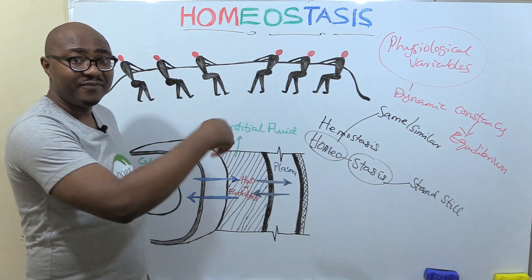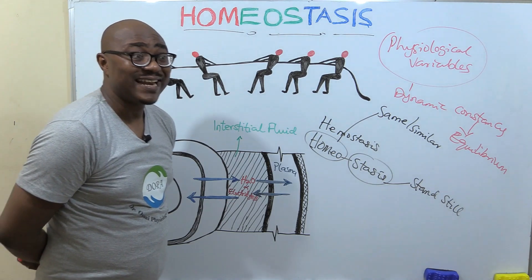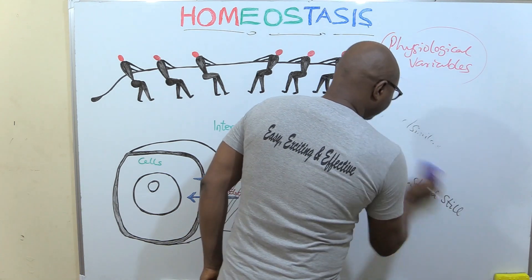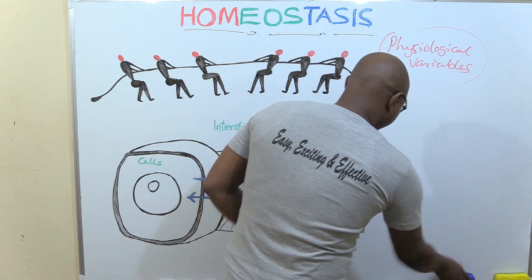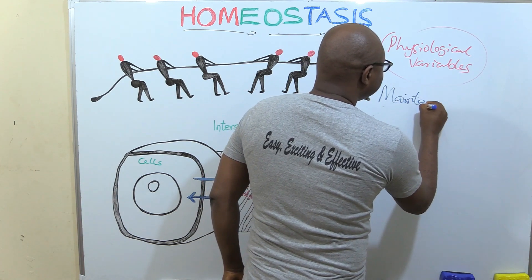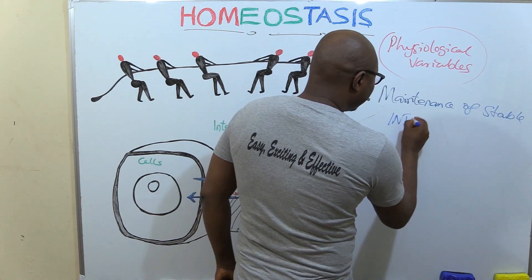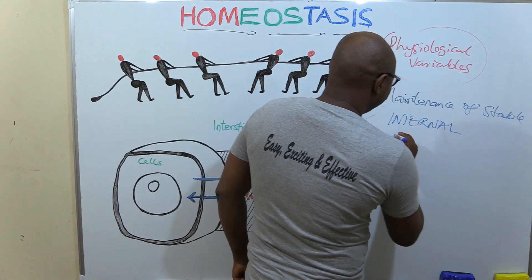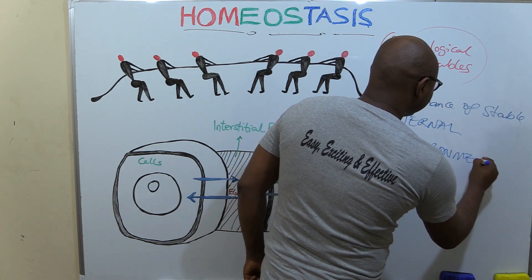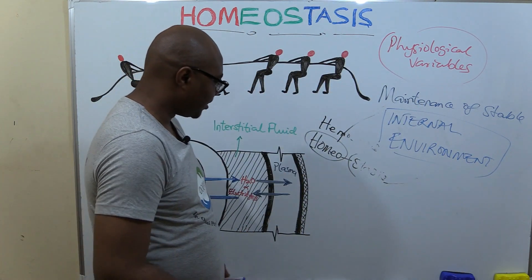So how do we define homeostasis? Homeostasis is the maintenance of a stable, balanced internal environment. That raises the question: what do we mean by internal environment? Let us write it down here — maintenance of stable internal environment. So what exactly do we mean by internal environment?